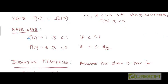The base case here will again be n equal to 1. Is T(1) greater than or equal to c times 1? It will be if we choose a value for the constant c that is less than or equal to 1. Similarly, we can prove that the claim holds at n equal to 2. We know that T(2) is 3, and 3 is greater than or equal to c times 2 if c is chosen to be less than or equal to 3/2. Both constraints can be satisfied if we choose c greater than 0 but less than or equal to 1.